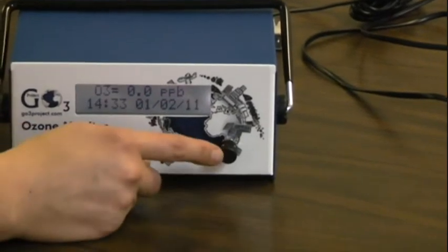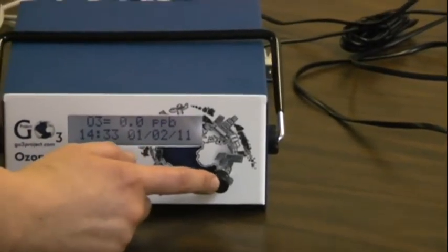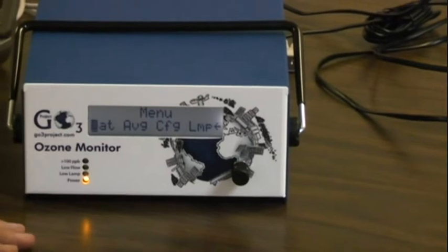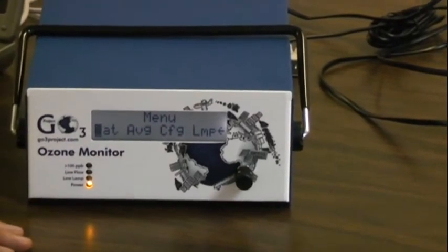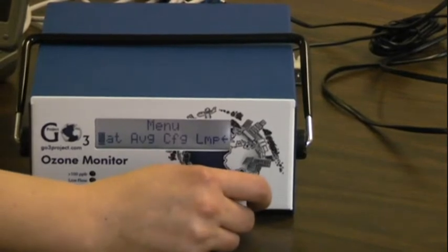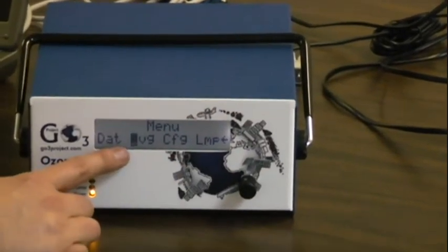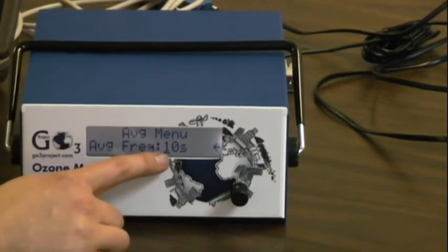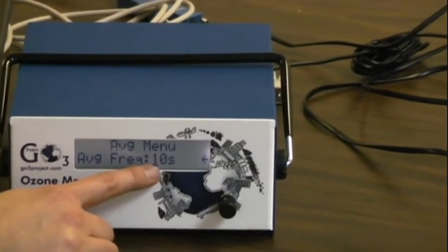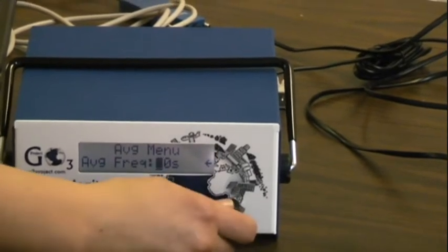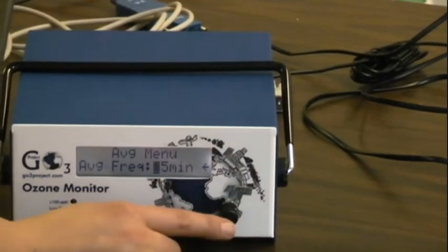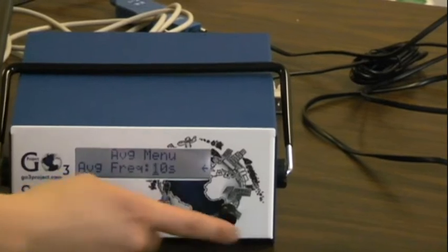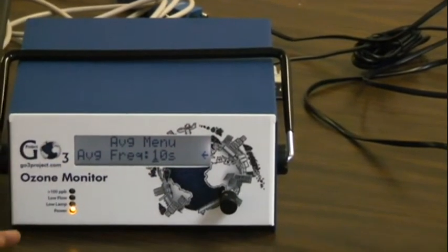To access the ozone monitor menu, you press and hold the black button to the right and you'll see menu come up. We're going to change the averaging to 10 second averaging, which means it will throw a data point every 10 seconds. You want to scroll so your cursor is over AVG and click once to select AVG. Now your cursor is on the frequency. You would click once to change it and then scroll over to 10 seconds and click once to select that frequency.